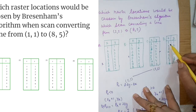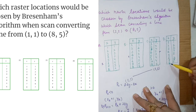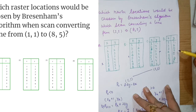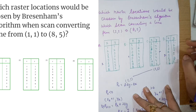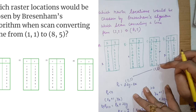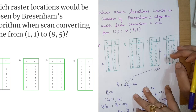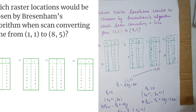Now checking option D: the sequence goes (1,1), (2,2), (3,3)... but then comes (6,4) after (5,5), which means y decrements from 5 to 4. In Bresenham's algorithm, decrement never happens. So option D is also wrong. Therefore, option C is the correct answer. This is the short trick to solve this question within seconds. If you liked the video, please like, share, and comment. If you have any other question or problem, please comment. Thank you.